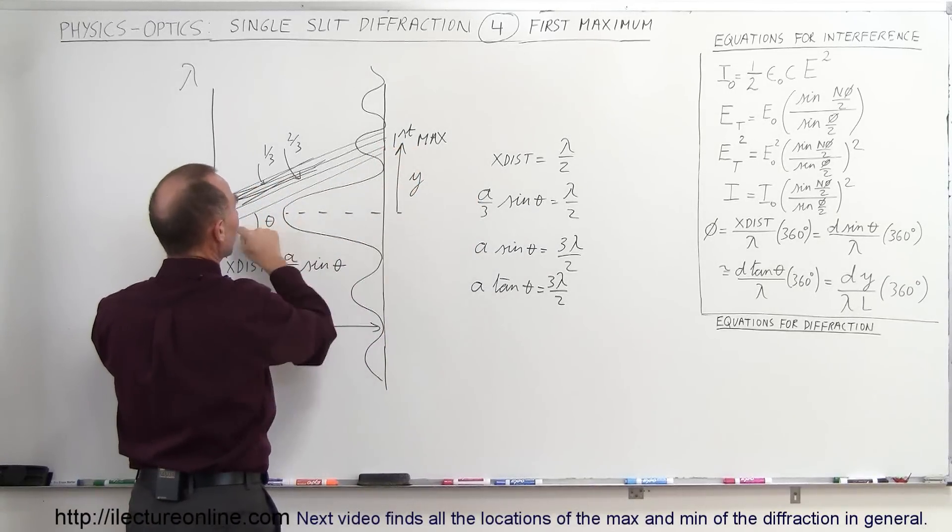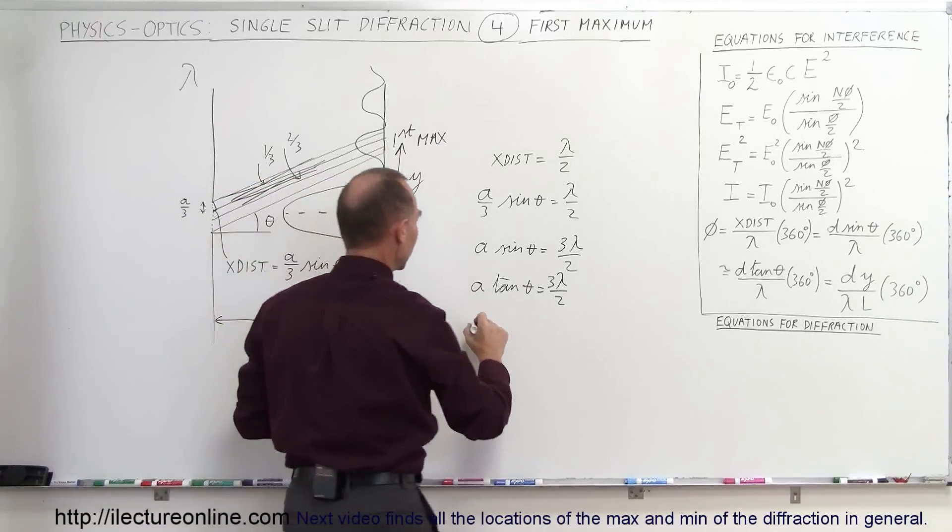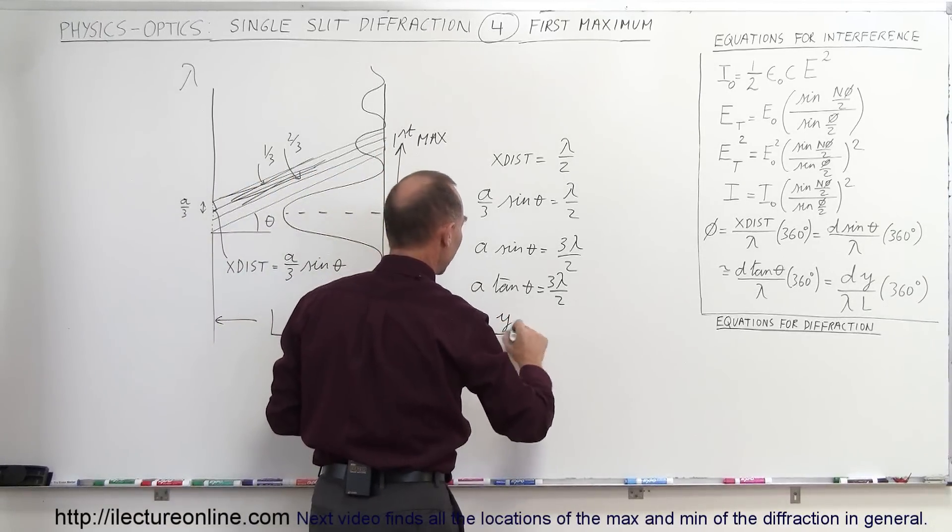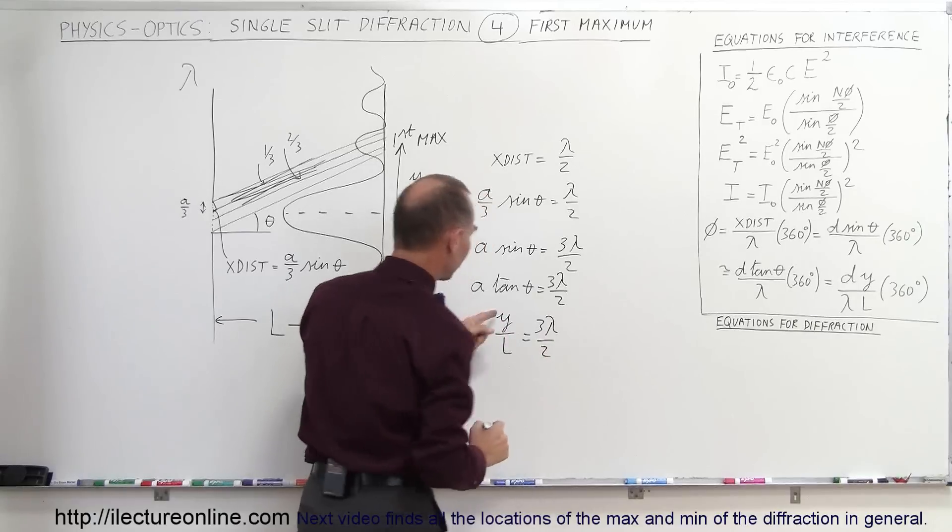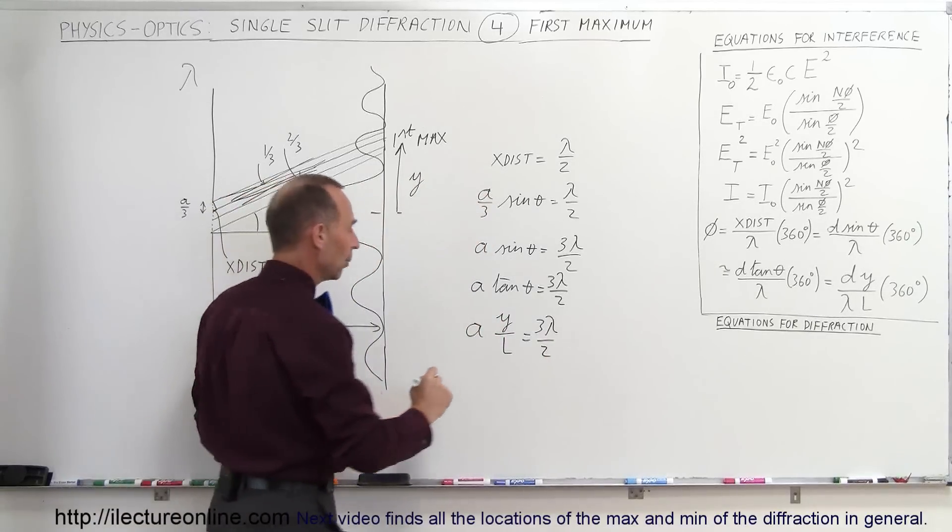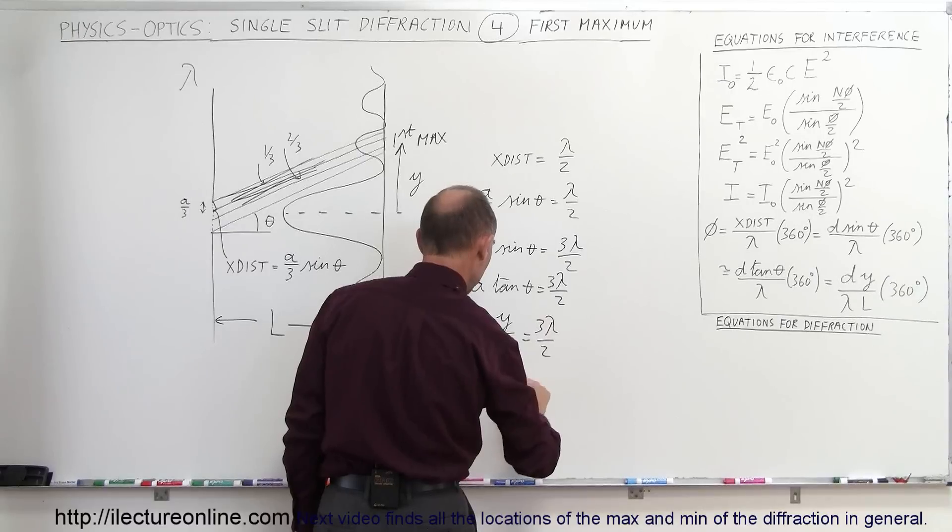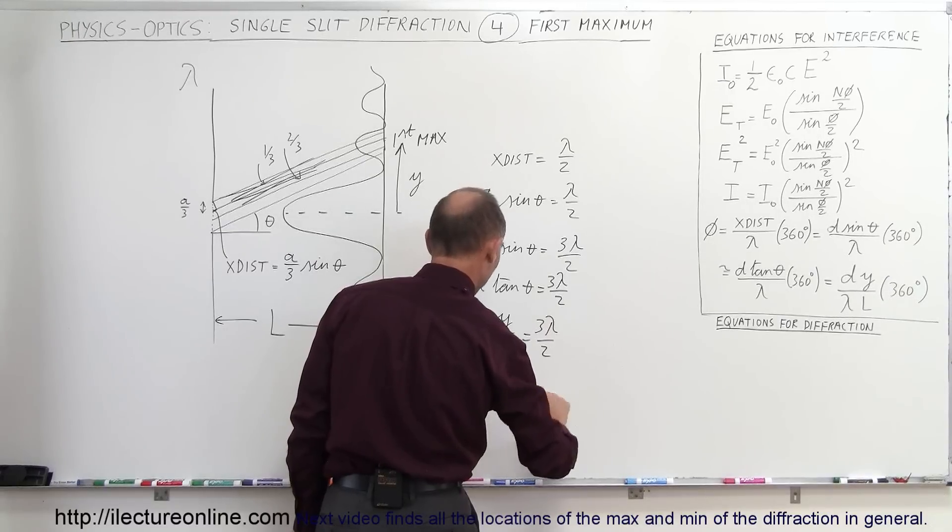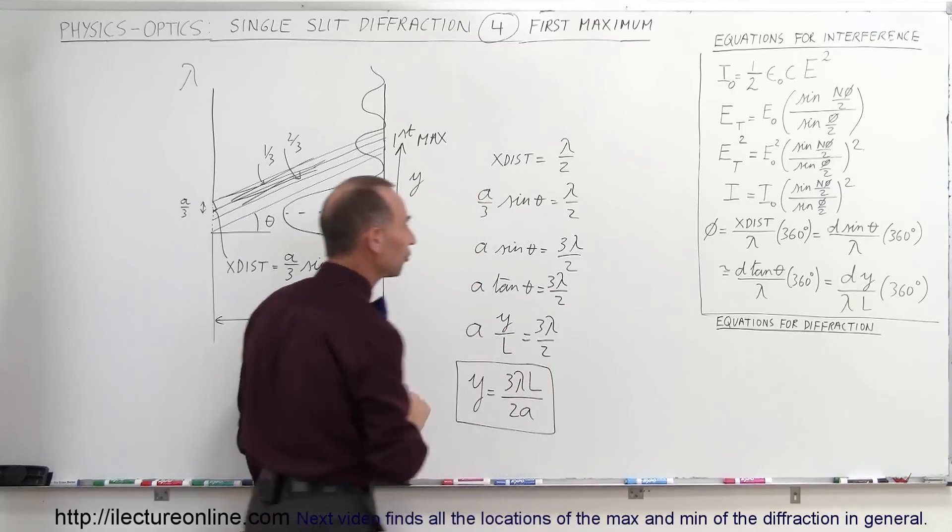notice this is the angle theta, so it's the opposite side divided by the adjacent side, so this can be written as a times y over l is equal to 3 lambda over 2, and then if we solve this equation for y, we get y is equal to 3 lambda l divided by 2a, and that will be the location for the first maximum.